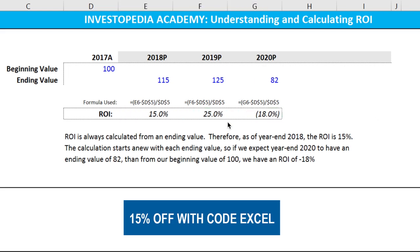One advantage of return on investment is that it's so simple and comparable. We can say this asset in the year 2020 returned us negative 18 percent, but hypothetically some other asset returned us a positive return. The big problem with this, however, is that it doesn't consider the time value of money.